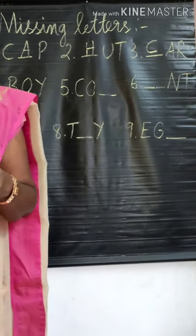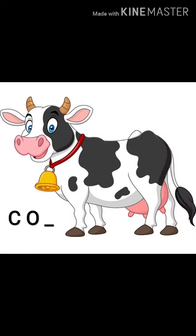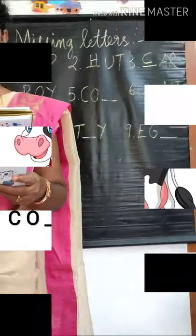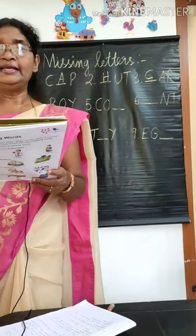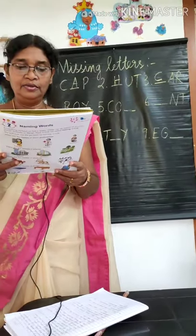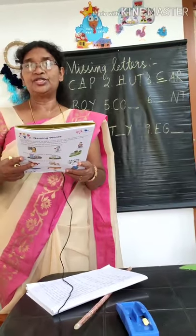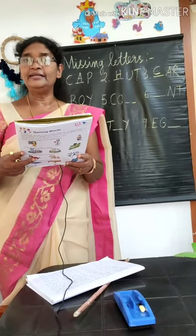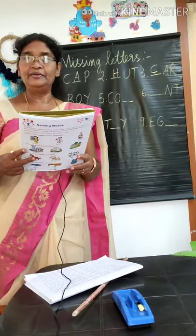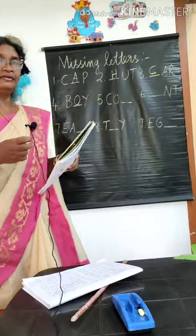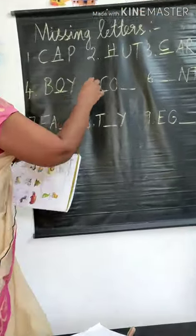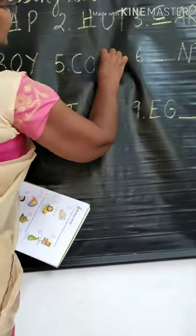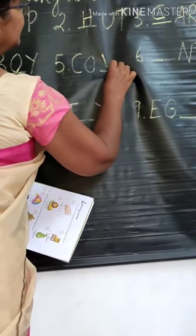Fifth one is COW. C, O, dash — which is the missing letter? W. Write capital letter W.